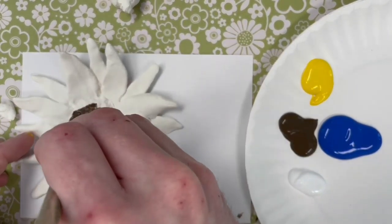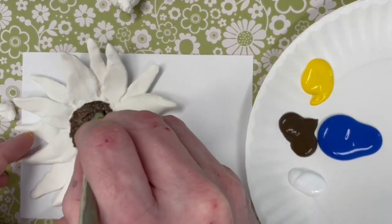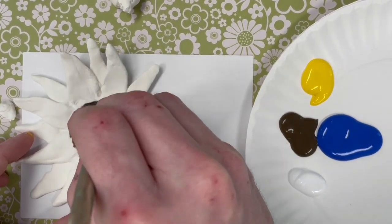We have four colors: brown, yellow, and blue. So I'm gonna paint the center of it brown, the center of the sunflower here.